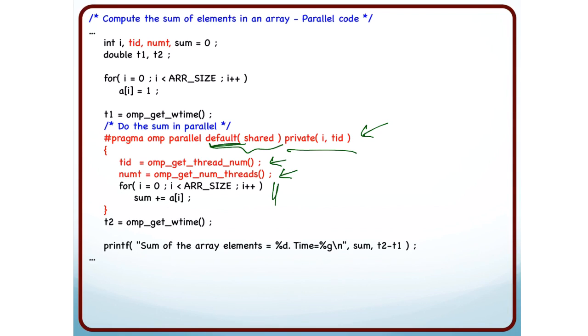And then I execute this code for I equal to 0 is less than array size I plus plus sum plus equal to AI.